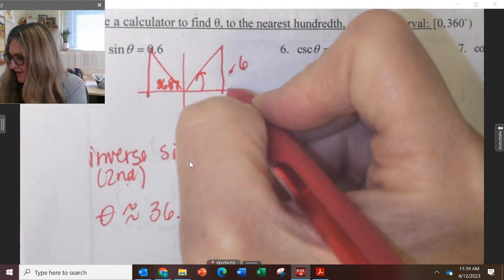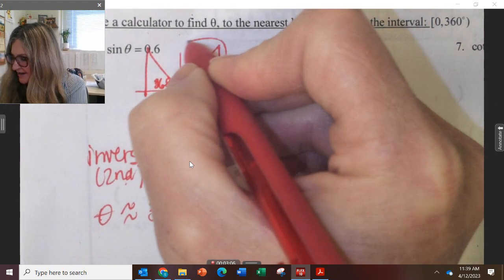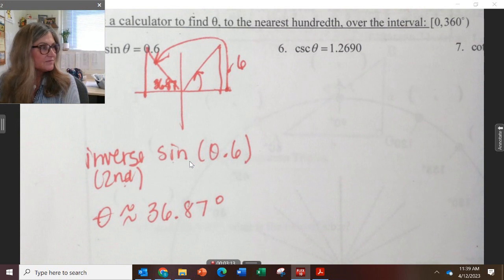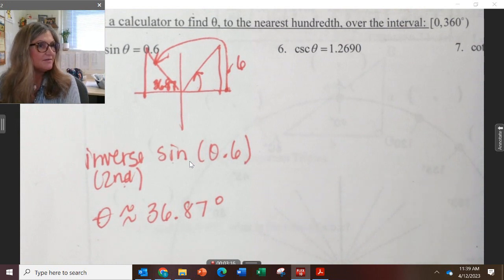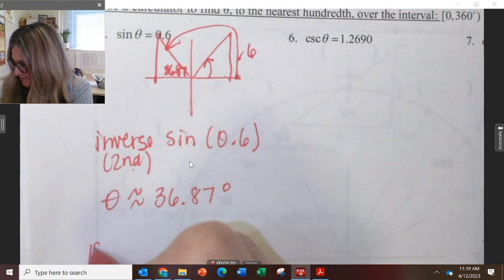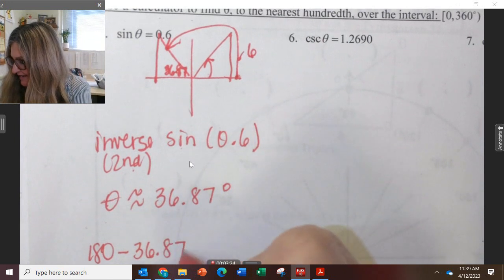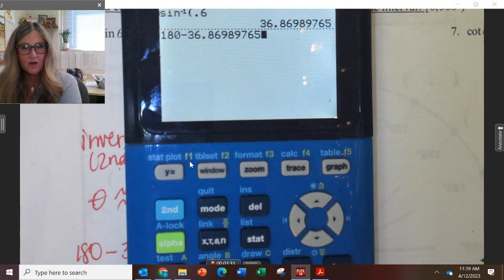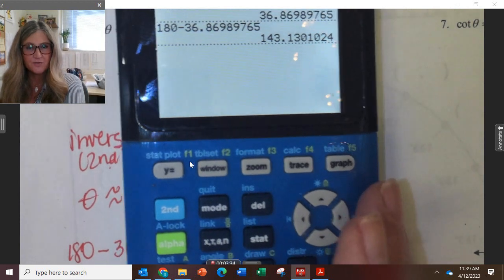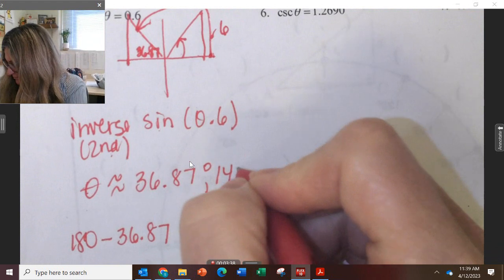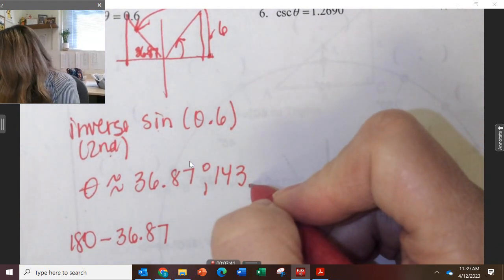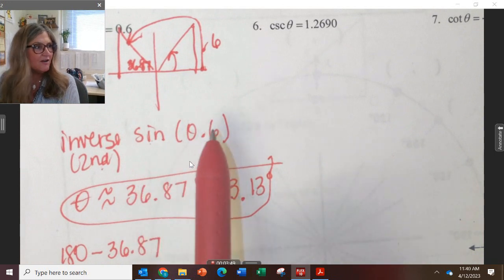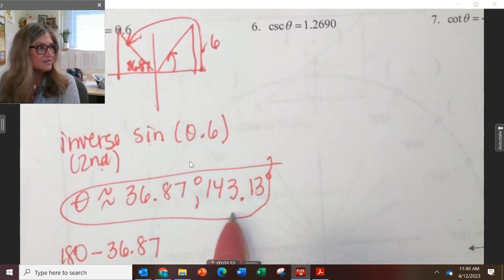How would I find the angle then in standard position that starts here and goes around and ends right there? How would I figure out that angle? Subtract it from 180. So my other answer then is going to be 180 minus 36.87. So a quick way to do this is 180 minus my last answer. I just go up and get it, and it's 143.13. Those are the two angles that will have a sine ratio of 0.6.